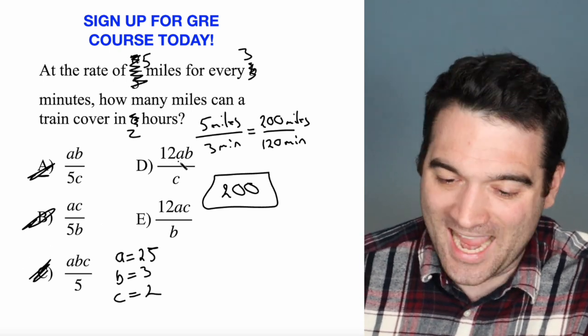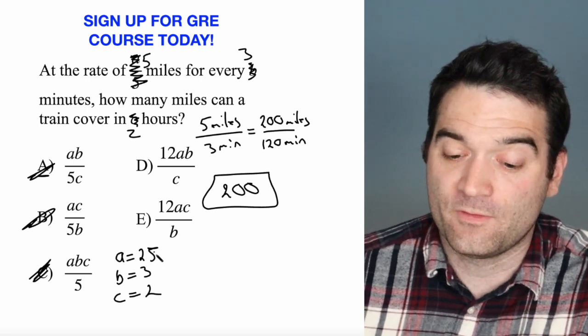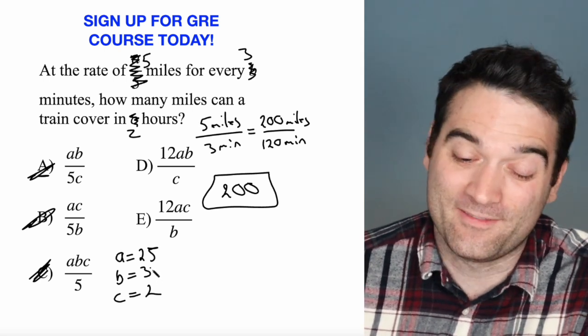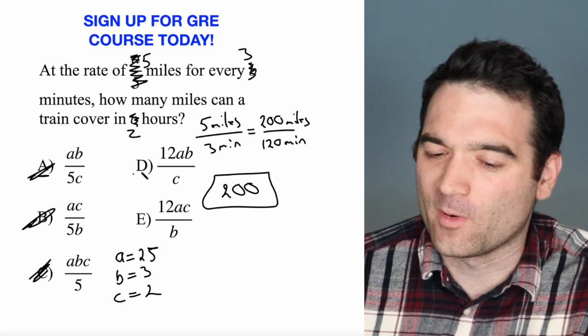12 times A times B divided by C. If I do 12 times 25 times 3, so 12 times 75 divided by 2, I think that gives me 450. I'm nowhere near 200.